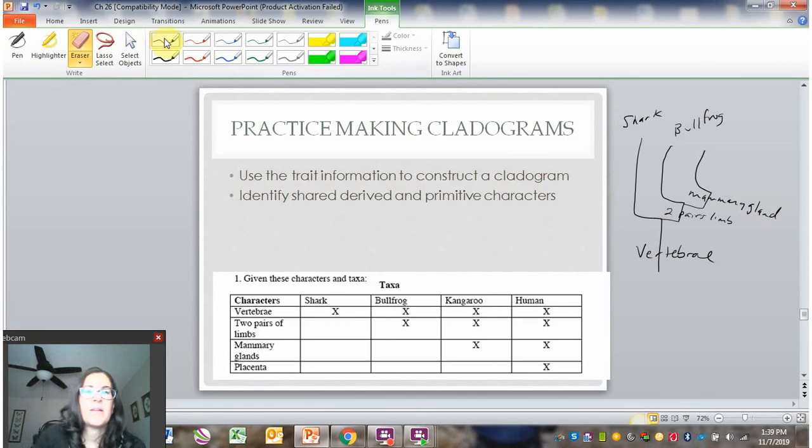Let me give myself a little room here. So there's my mammary gland. I've got my kangaroo there. And then my next split is for the placenta. So let me put placenta here. And the only organism to have the placenta is the human. And that is the kangaroo in the out-group for the placenta. There we go.